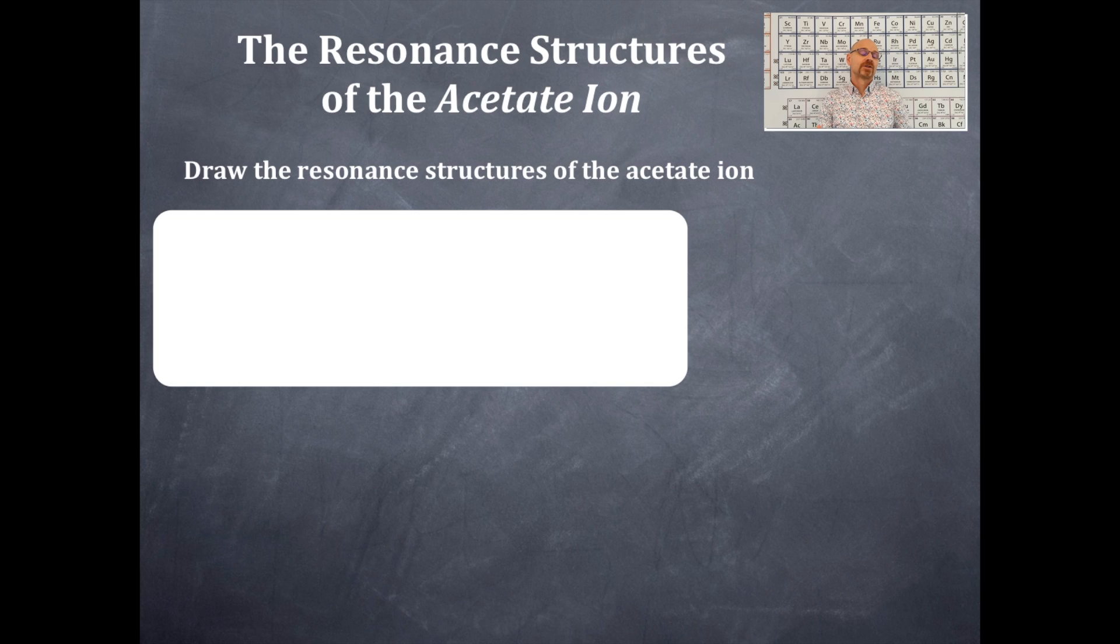Okay, we need to do a Lewis dot structure first, but before we do a Lewis dot structure, we need to know the formula for the acetate ion. So there is the acetate ion. That's CH3COO and then the negative one charge.